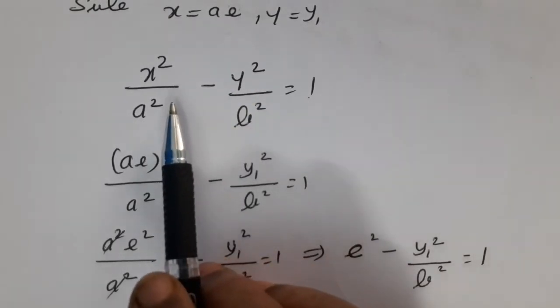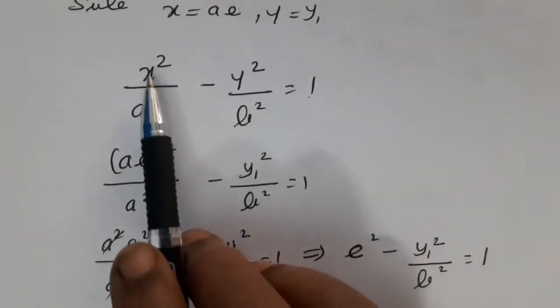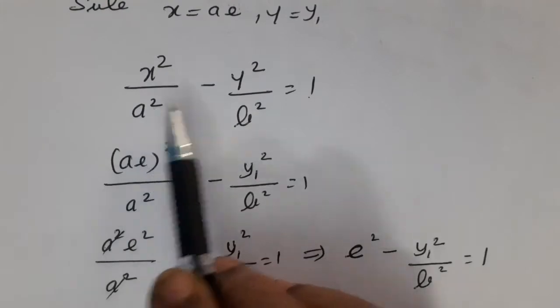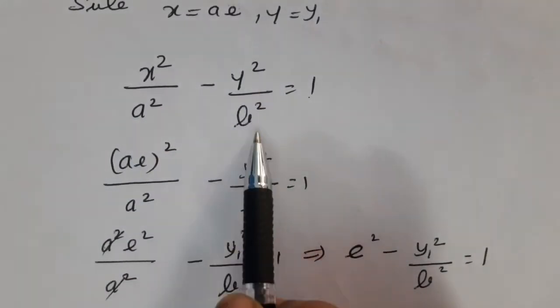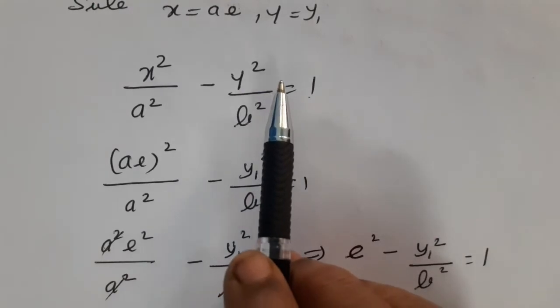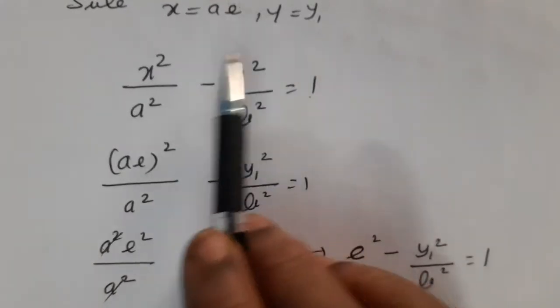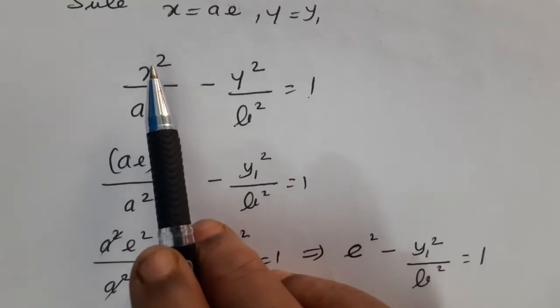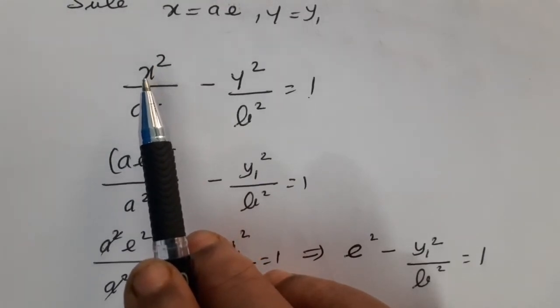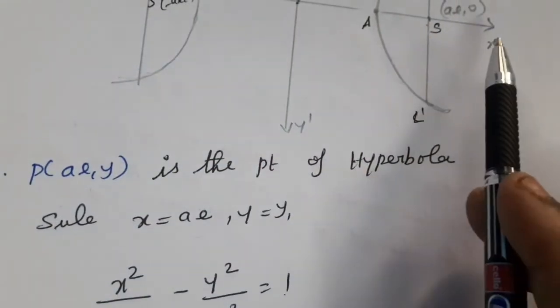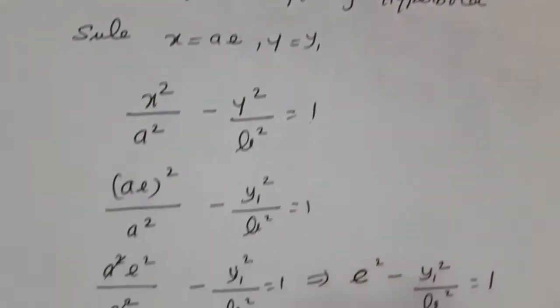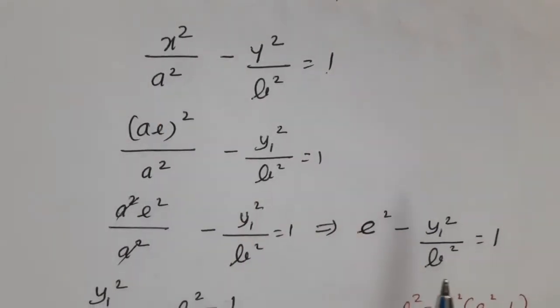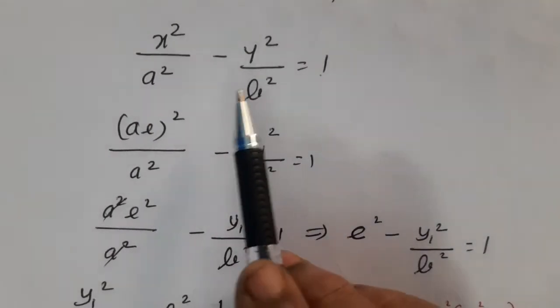The equation of the hyperbola is x²/a² − y²/b² = 1. We substitute x = ae: (ae)²/a² − y₁²/b² = 1, which gives a²e²/a² − y₁²/b² = 1. Since a² cancels, we get e² − y₁²/b² = 1, therefore y₁²/b² = e² − 1.